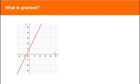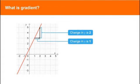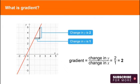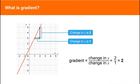For this graph, the change in y is two. And the change in x is one. So the gradient is two divided by one, which is two. Another way to think of this is that the graph goes up two units for every one unit across. So the gradient is two.